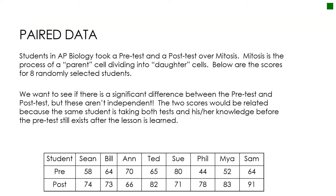Here's an example. Students in an AP Bio class took a pre-test and a post-test over mitosis, which is the process of a parent cell dividing into daughter cells. Below are the scores for eight randomly selected students. We can see that Sean, Bill, Ted, Phil, Maya, and Sam did better on their post-test, while Ann and Sue did not. The problem is the tests are not independent — this is Sean's pre- and post-test scores, and those two scores are not independent because Sean took both tests. So they are related.